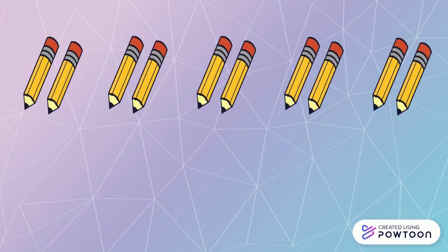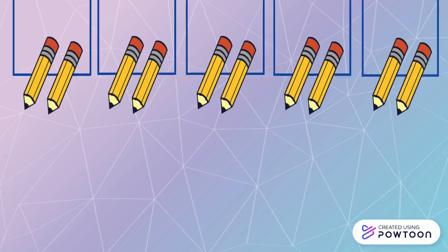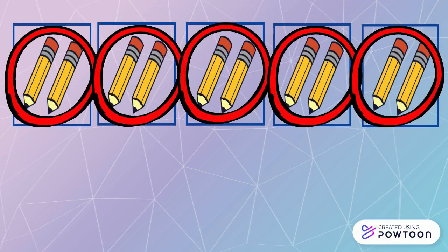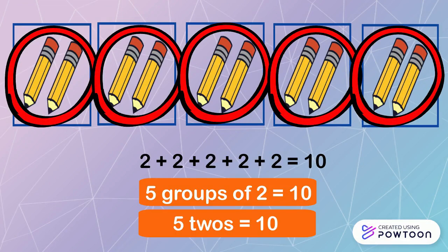Okay, students. I want to remind you to write the groups first, and then the number in each group — just like this example. Because there are five groups of pencils, so we write five first. And then two pencils in each group, so we write two.